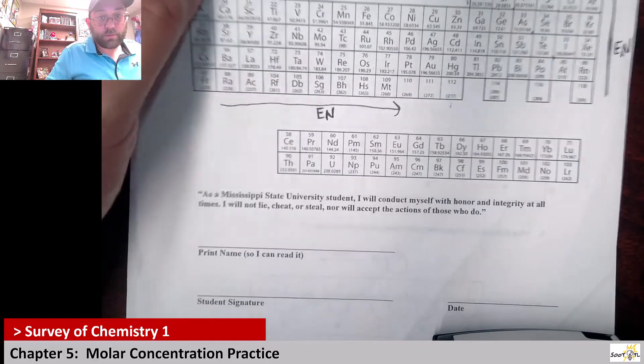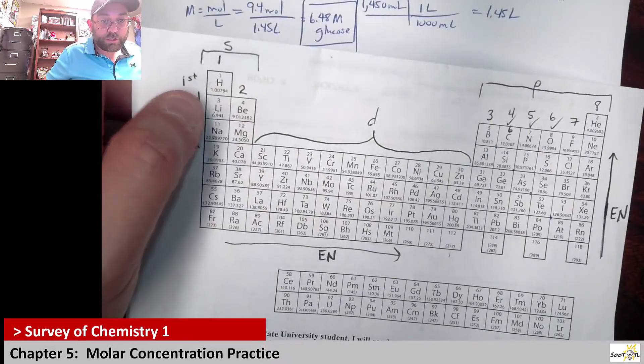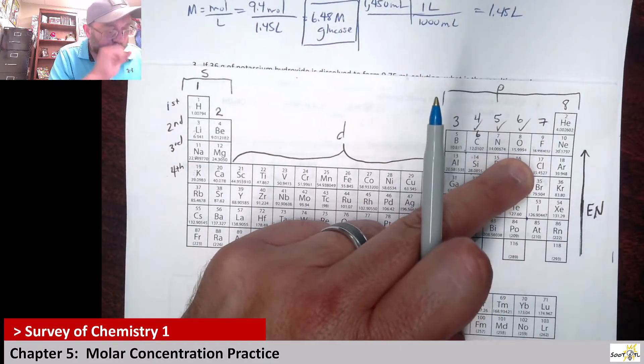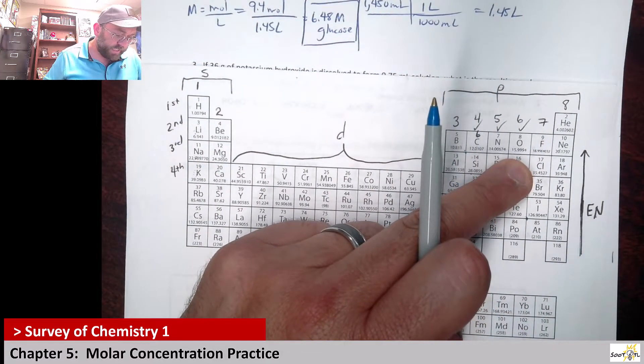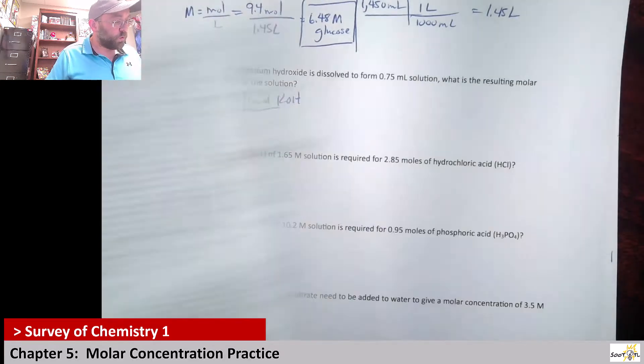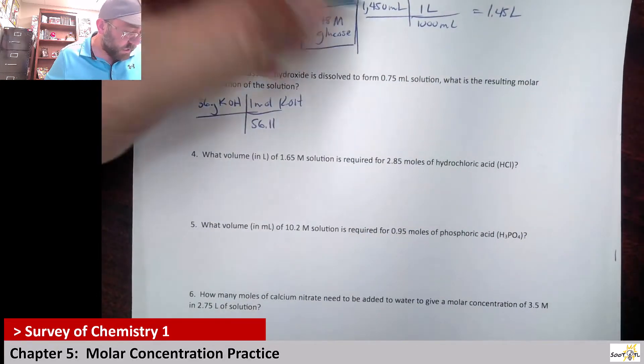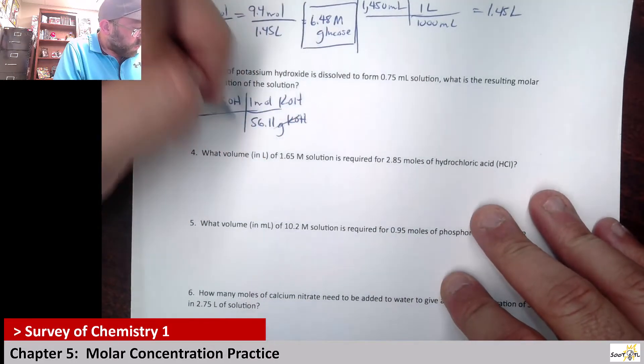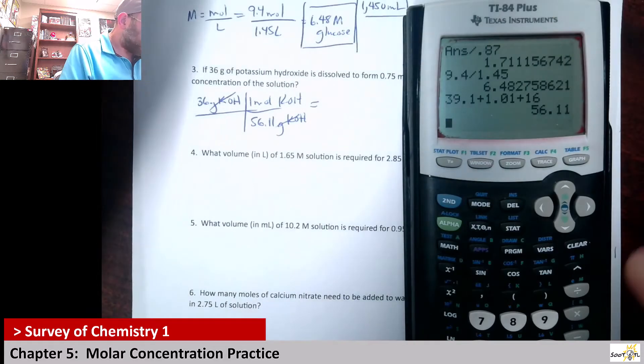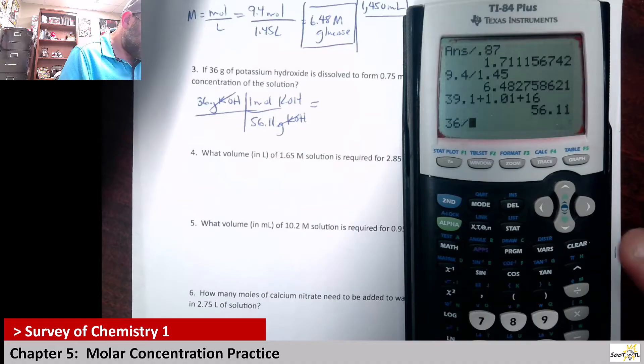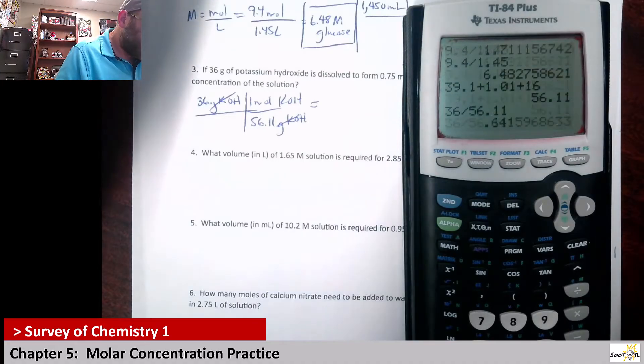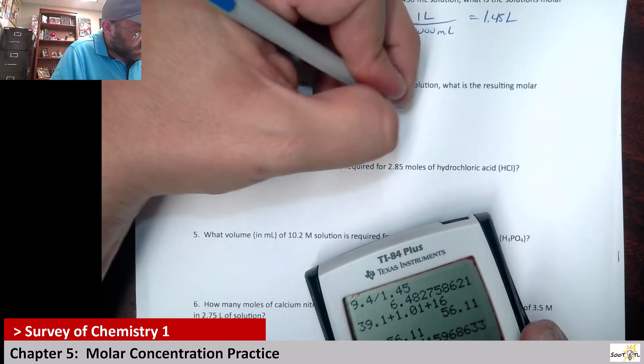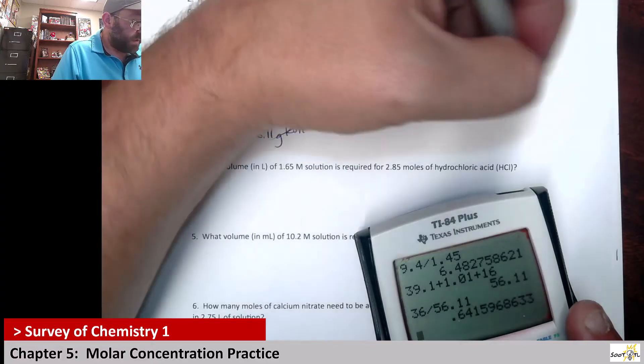Plus hydrogen which is 1.01. Plus oxygen which is 16. So it's going to be 56.11. So 56.11 grams of KOH is 1 mole. That would give me a mole amount of something small, something less than 1. 36 divided by 56.11. So that's 0.64. That's 0.64 moles of KOH.